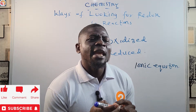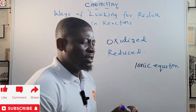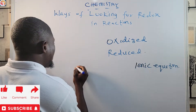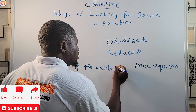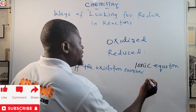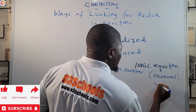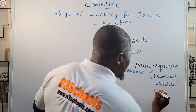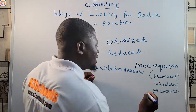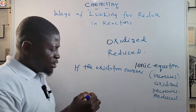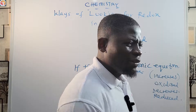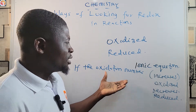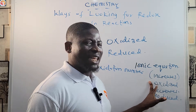If the oxidation number of a particular species increases, it is the oxidized species — oxidation has occurred. If the oxidation number decreases, it is the reduced species. So the most effective way is: write out the ionic equation, check the oxidation numbers, and determine whether each increases or decreases.